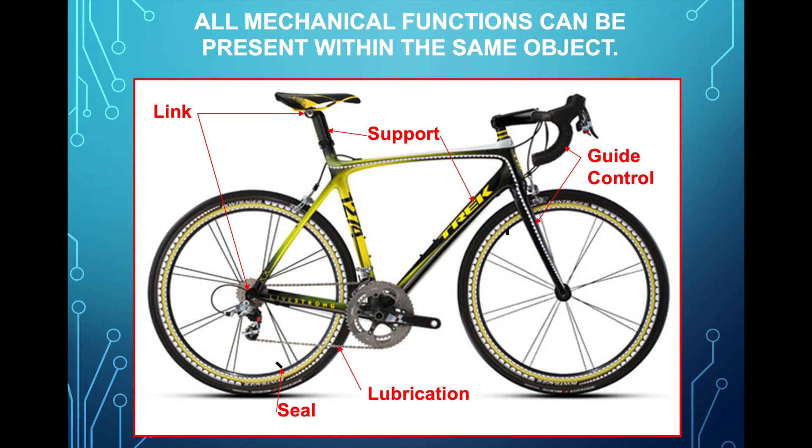So in an object, we might have all functions that are involved. So if we look at the bicycle, we have the guiding control. So we're guiding the movement of the bicycle by guiding the movement of the wheel. We have the support, right? The support supports other components.